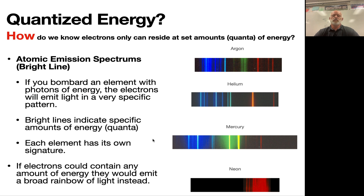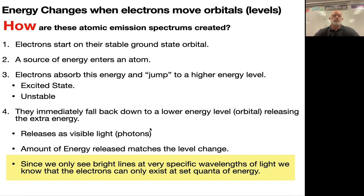The reason why we know that electrons have to be quantized is because they only form these bright lines. If they didn't do that, we'd have a full rainbow of colors coming off. So let's talk a little bit more about these bright line spectrums and how they're made. Here's our step-by-step of how it happens.